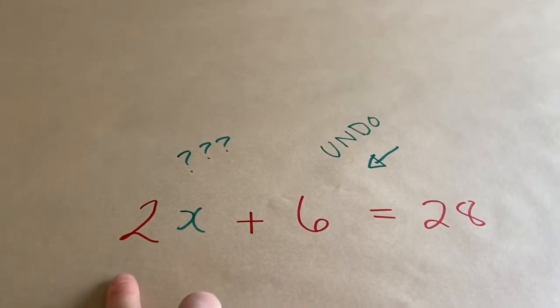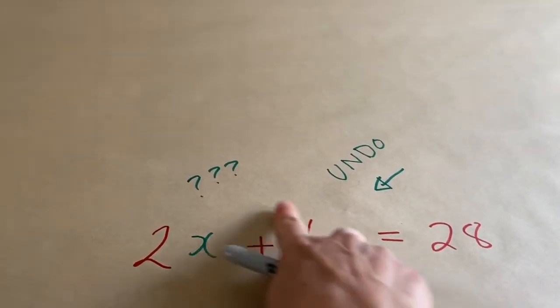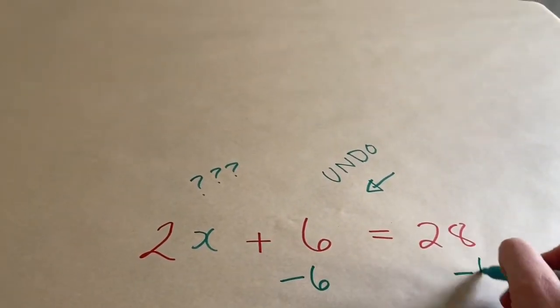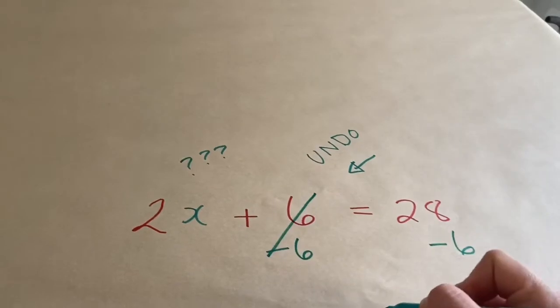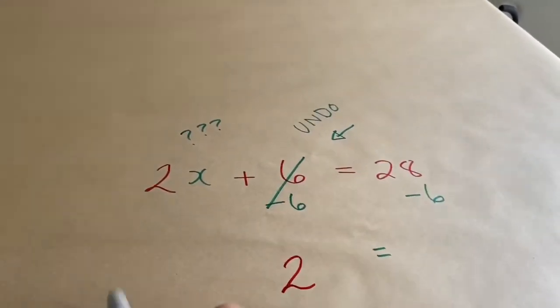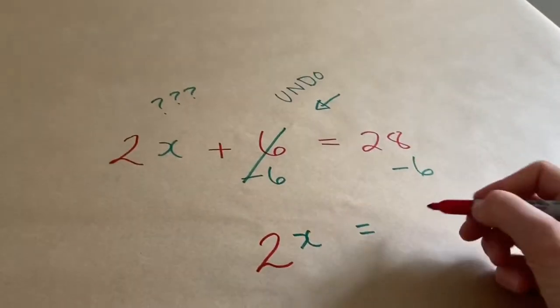So, if we took x and multiplied by 2, and then added 6, we want to undo the adding 6. So, I'm going to subtract 6. These cancel out. And I have that 2x is equal to 22.